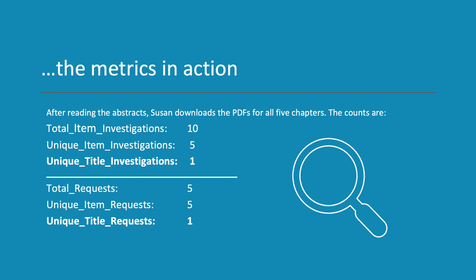After reading the abstracts, Susan downloads PDFs for all five chapters. The counts become Total Item Investigations 10, Unique Item Investigations 5, Unique Item Requests 5, Unique Title Requests 5, and Unique Title Requests 1. Because all five chapters downloaded by Susan are from the same book, the Unique Title Investigations and Unique Title Requests will only show as one.